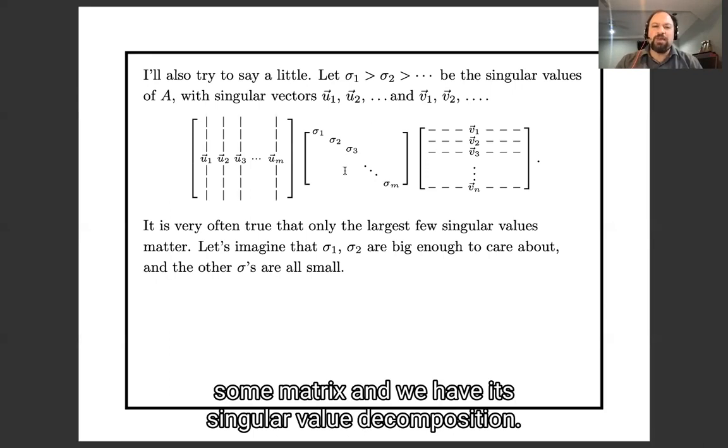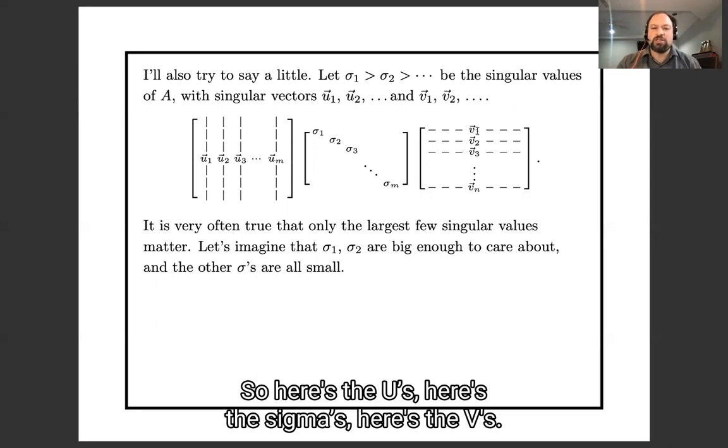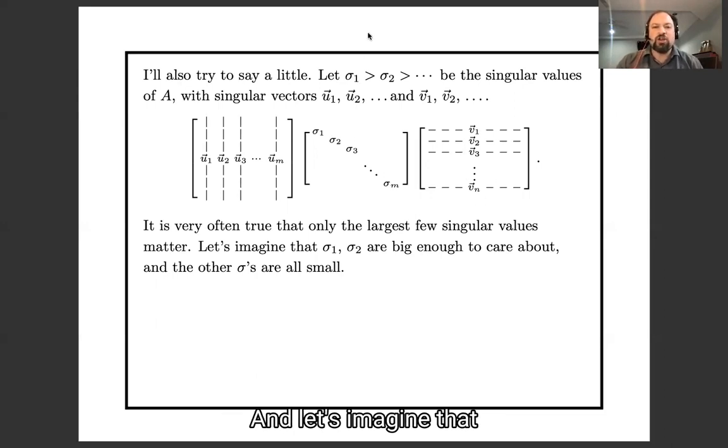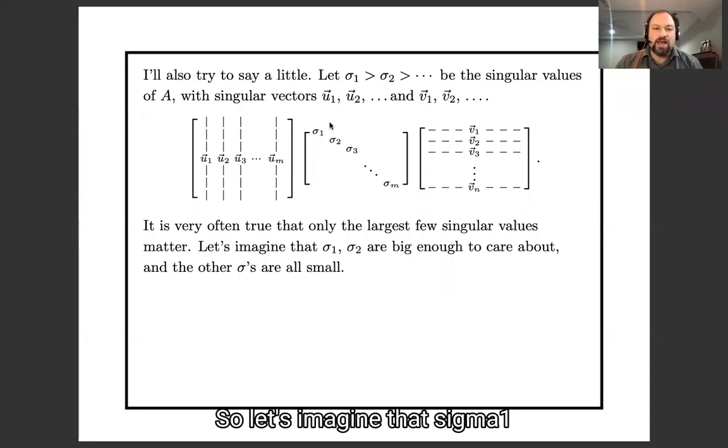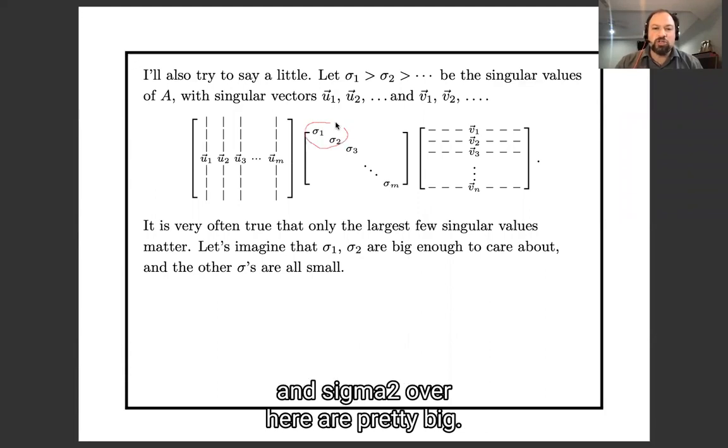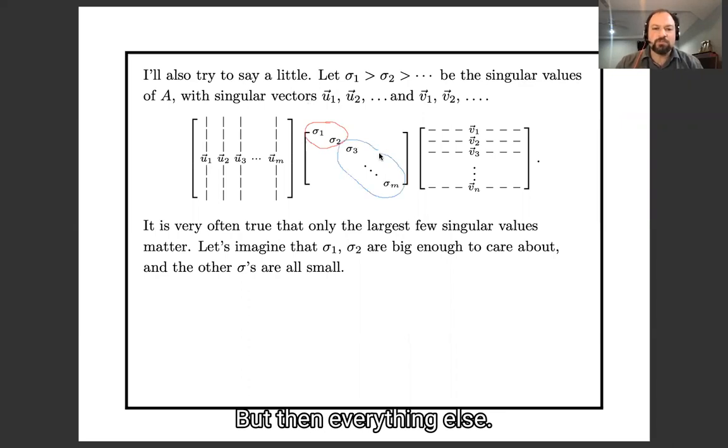So let's suppose we have some matrix and we have its singular value decomposition. So here's the u's, here's the sigmas, here's the v's. And let's imagine that almost all the sigmas are actually so small we can ignore them. So let's imagine that sigma 1 and sigma 2 over here are pretty big, but then everything else is really very small.